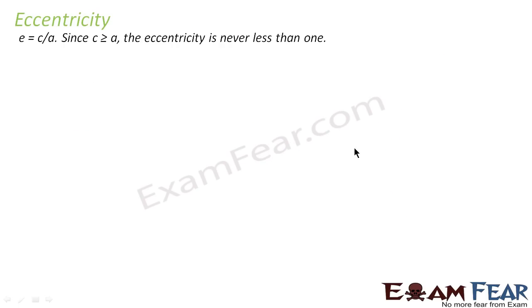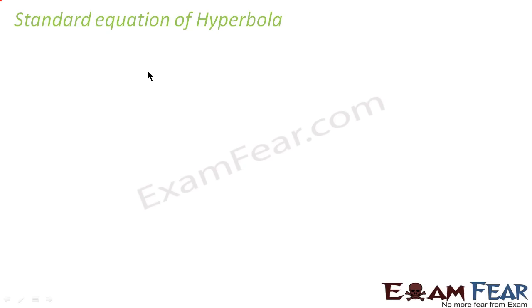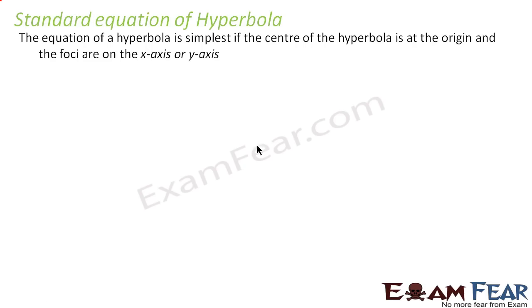Eccentricity is defined as c/a, and for a hyperbola it is never less than 1, because c is always greater than or equal to a.